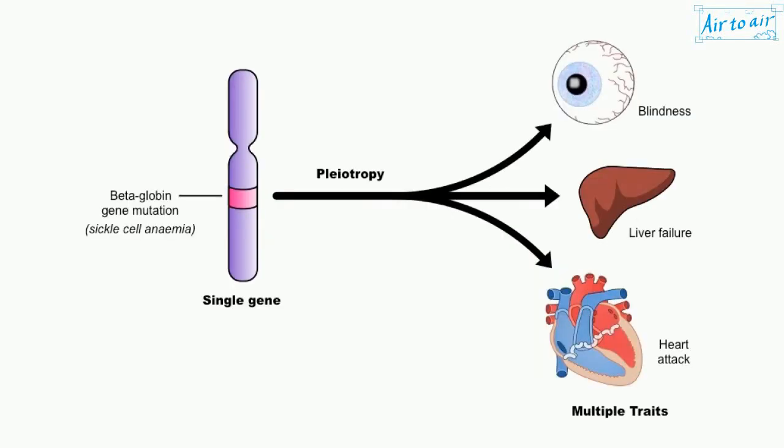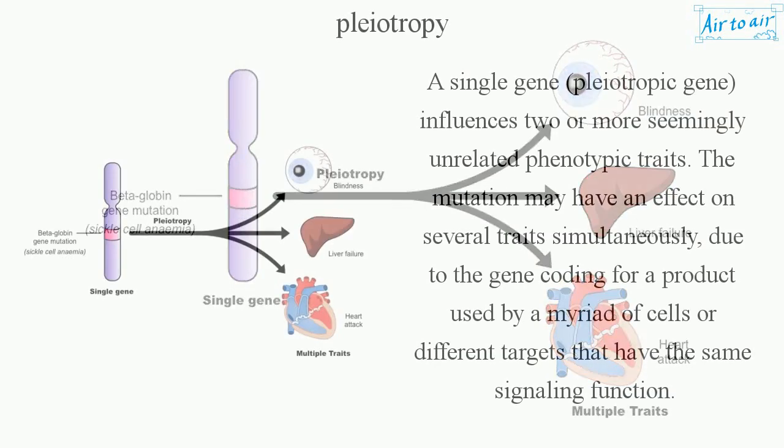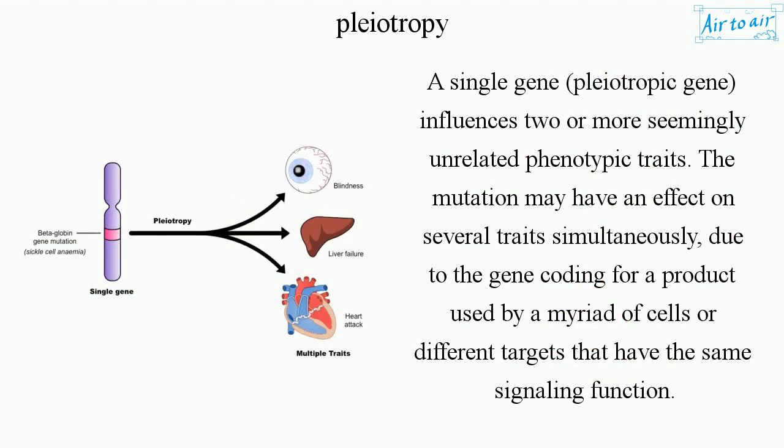Pleiotropy: a single gene influences two or more seemingly unrelated phenotypic traits. The mutation may have an effect on several traits simultaneously, due to the gene coding for a product used by a myriad of cells or different targets that have the same signaling function.